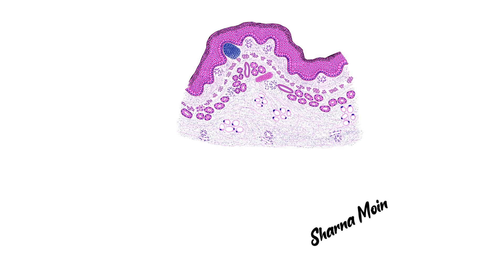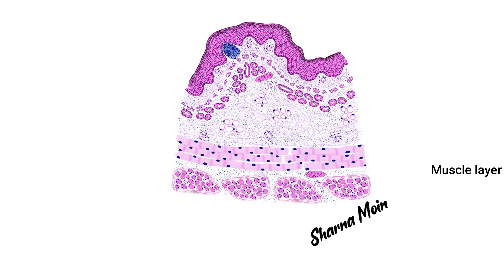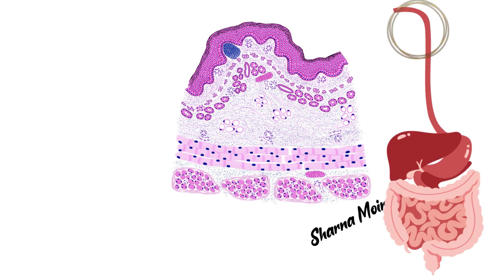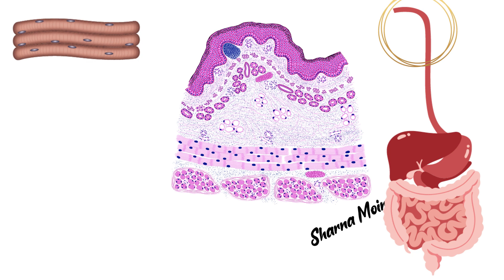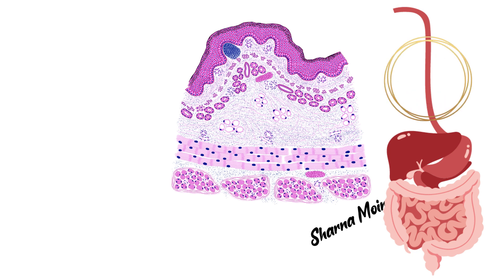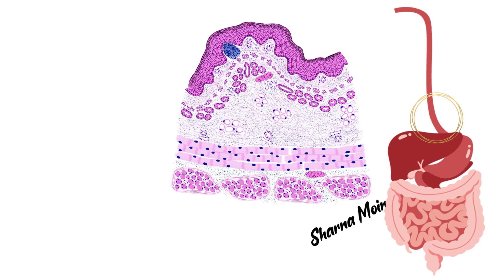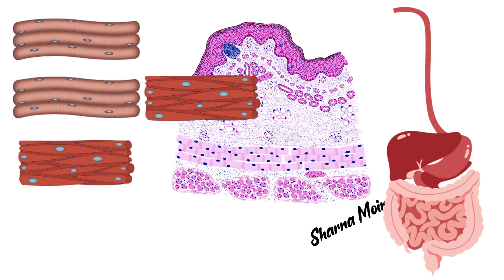Now let us move to the next layer: the muscle layer, or muscularis externa. It is composed of two layers: the inner circular layer and the outer longitudinal layer. In the upper third of the esophagus, the muscle layer contains only skeletal muscle fibers. In the middle third it contains both skeletal and smooth muscle fibers, while the lower third is composed entirely of smooth muscle fibers.